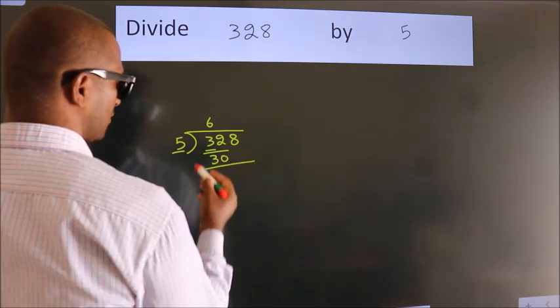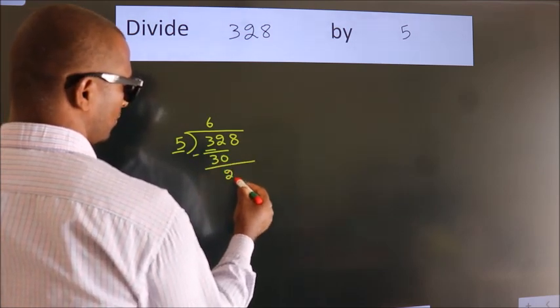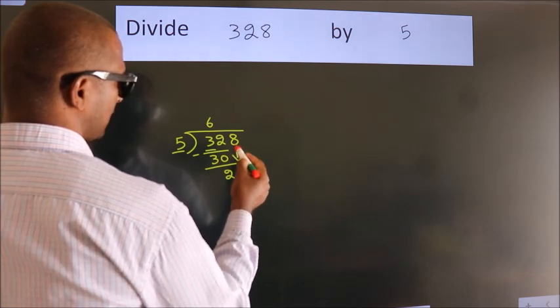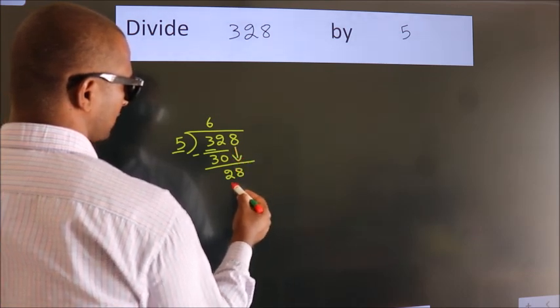Now we should subtract. We get 2. After this, bring down the beside number, so 8 down. So 28.